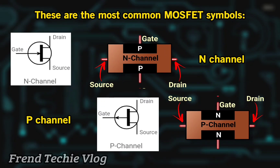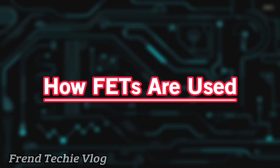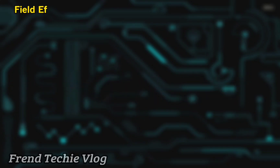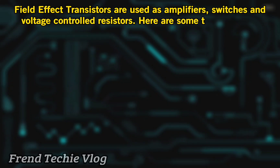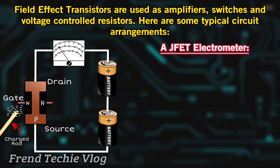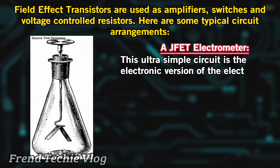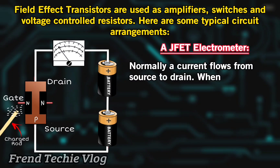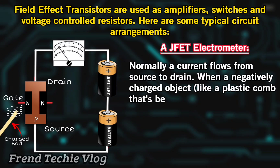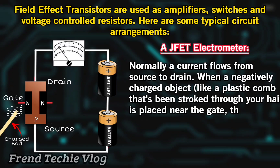Field-effect transistors are used as amplifiers, switches, and voltage-controlled resistors. Here are some typical circuit arrangements. A junction field-effect transistor electrometer: this ultra-simple circuit is the electronic version of the electroscope. The gate lead of an N-channel JFET is left disconnected. Normally a current flows from source to drain. When a negatively charged object, like a plastic comb that's been stroked through your hair, is placed near the gate, the current flow is reduced or stopped.